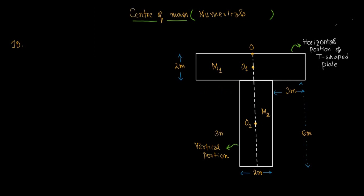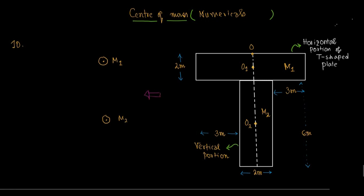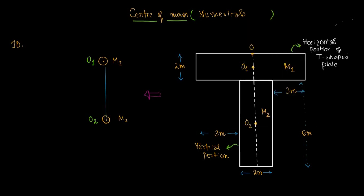The T-shaped plate can be assumed as a system of two particles having masses M1 and M2, where M1 is the mass of the horizontal portion and M2 is the mass of the vertical portion. These two particles have their centers of mass at O1 and O2. C will be the center of mass of this system, and the point C will exist between the two points O1 and O2.